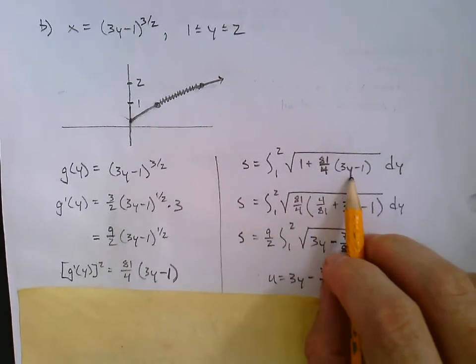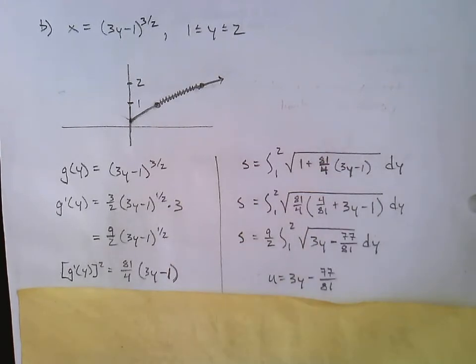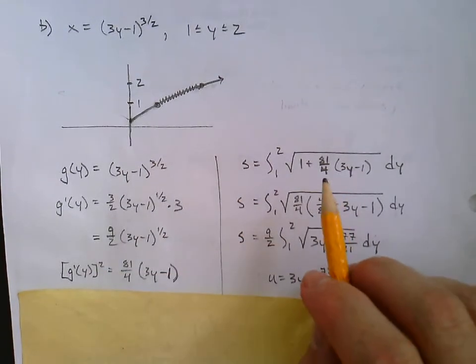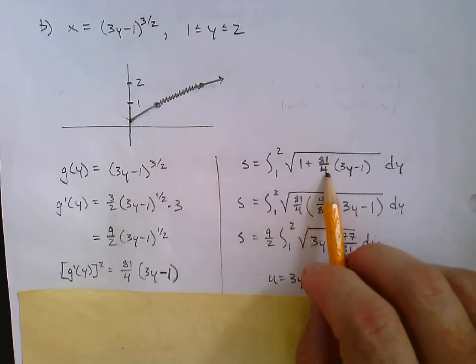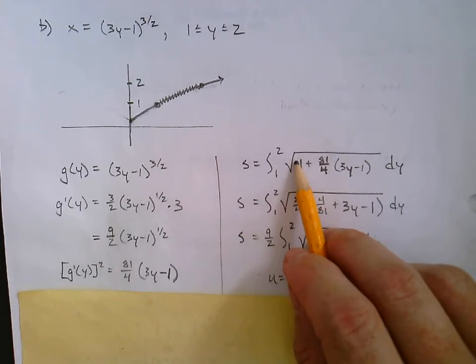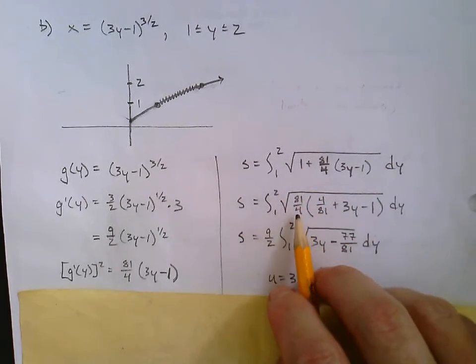And we've got our variable y there as well. So what are we going to do with that? We're going to use a very similar approach to get started as the last one. We're going to factor out 81 over 4 right there.